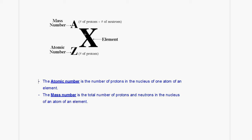In the periodic table you will see a symbol for an element with the mass number at the top and the atomic number at the bottom. The atomic number tells you how many electrons and how many protons are present, and the difference between the mass number and atomic number gives you the number of neutrons. The atomic number is the number of protons in the nucleus of one atom of an element, and the mass number is the total number of protons and neutrons in the nucleus of an atom of an element. You need to know these two definitions.